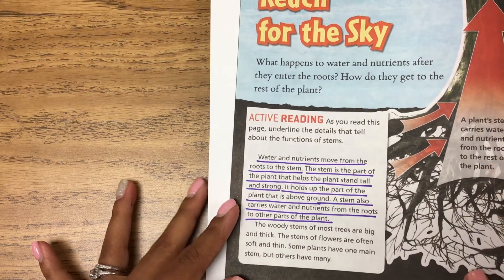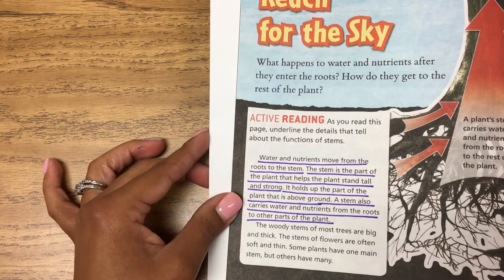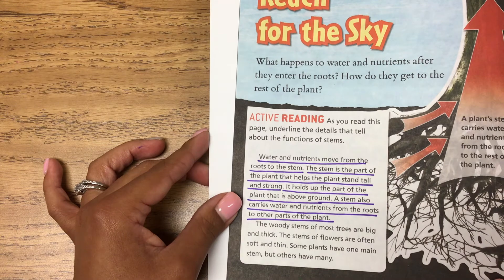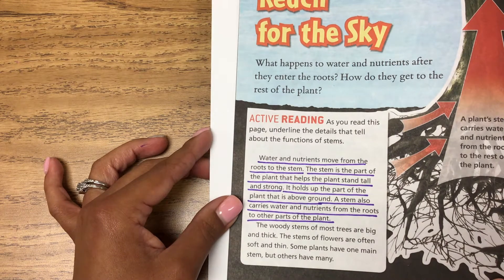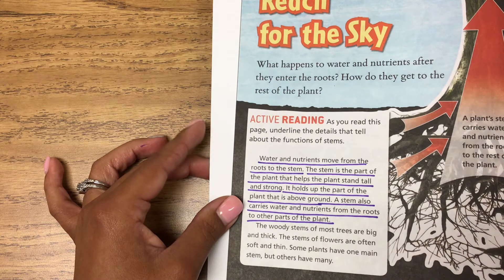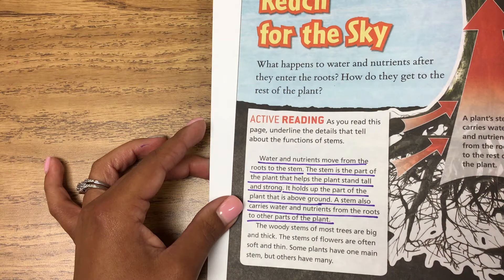What happens to water and nutrients after they enter the roots? How do they get to the rest of the plant? Water and nutrients move from the roots to the stem. The stem is the part of the plant that helps the plant stand tall and strong — it holds up the part of the plant that is above ground. A stem also carries water and nutrients from the roots to other parts of the plant.